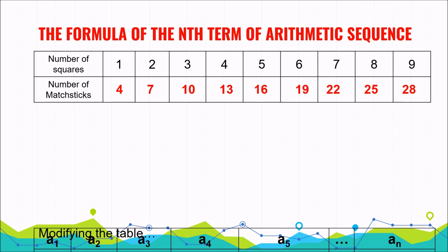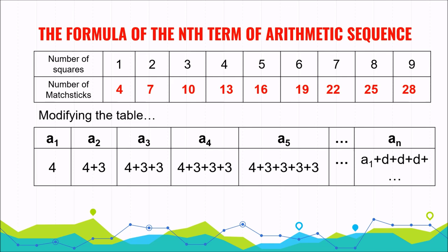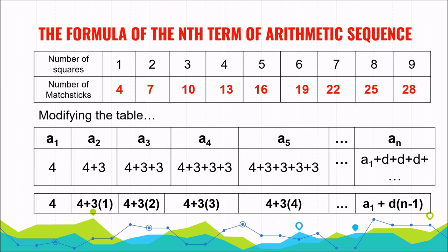We can update the table indicating a sub n. Notice that if you have 2 squares, use 1 to multiply; if you have 3, use 2; if you have 4, use 3; if you have 5, use 4. For a sub n, if n is the number of squares, you need n minus 1. So n minus 1 will be used in the final formula for the arithmetic sequence.